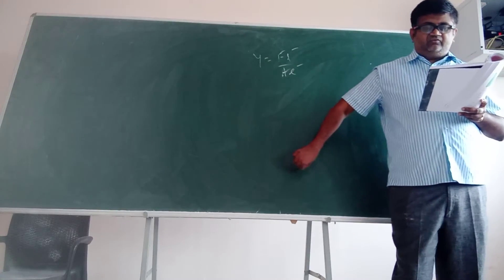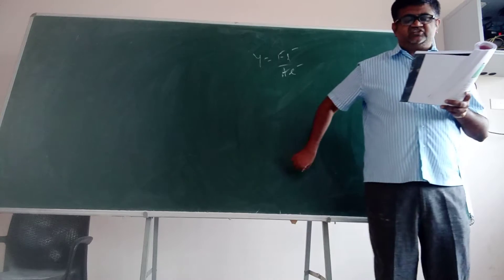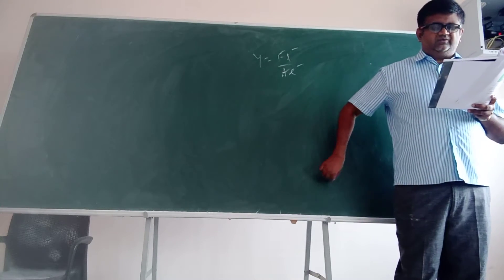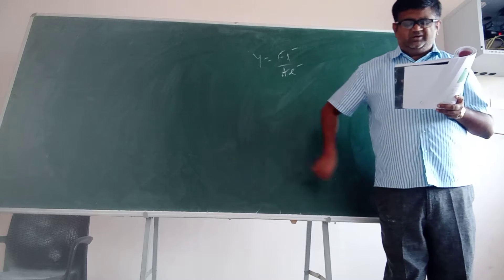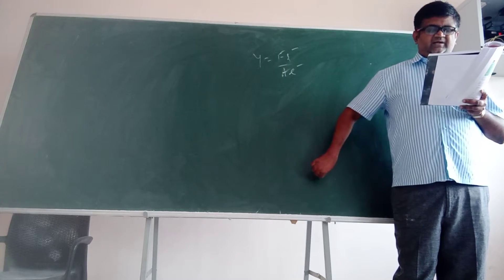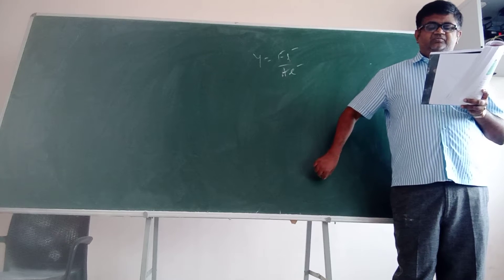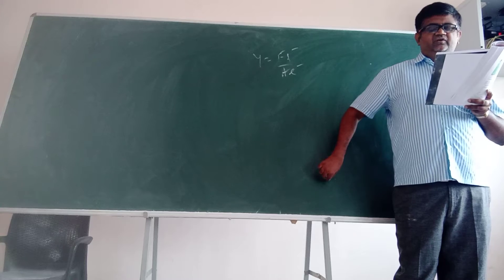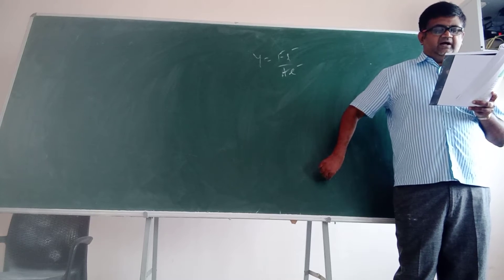A brass wire of length 4.5 meters with cross sectional area and a copper wire of length 5 meters with cross sectional area given are stretched by the same load. So, the same elongation is produced in both the wires. Find the ratio of Young's modulus of brass and copper.